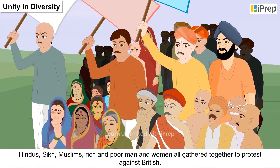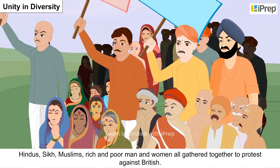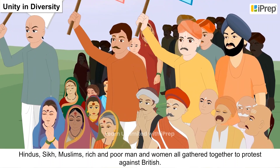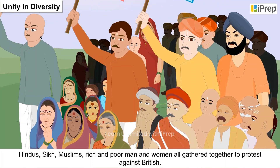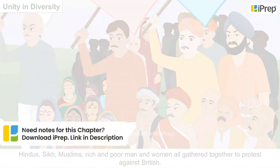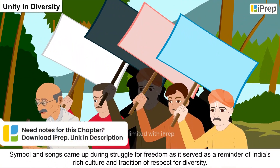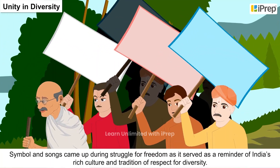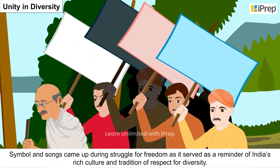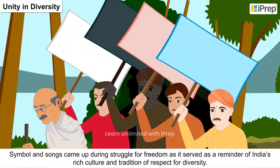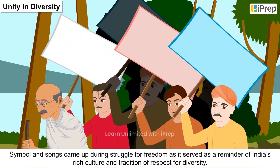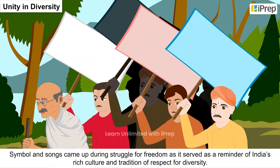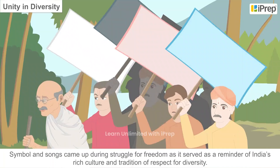Hindus, Sikhs, Muslims, rich and poor, men and women — all gathered together to protest against the British. Symbols and songs emerged during the struggle for freedom, serving as a reminder of India's rich culture and tradition of respect for diversity.